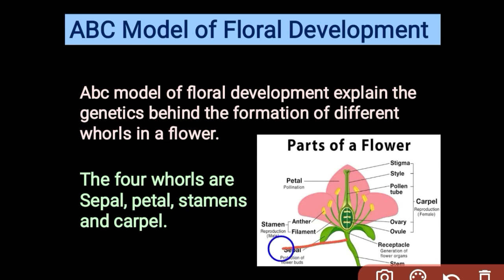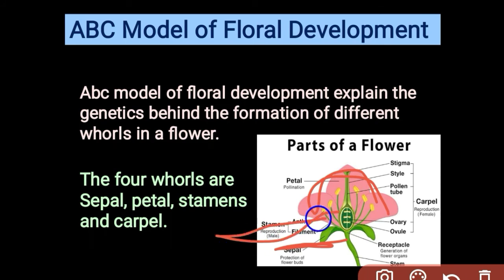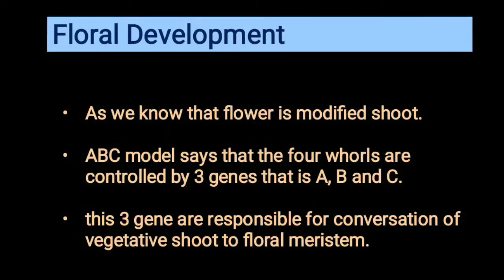The four whorls are sepals, petals, stamens, and carpels. Stamens is the male reproductive organ and carpel is the female reproductive organ, which is composed of style, stigma, and ovary.